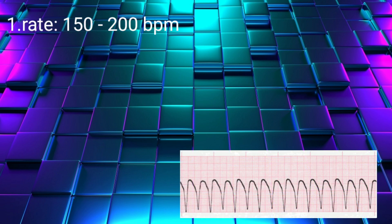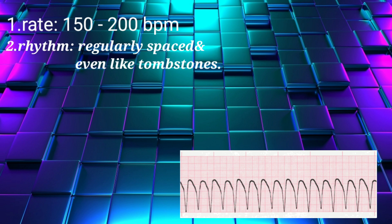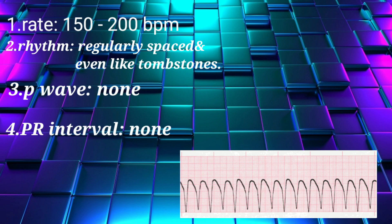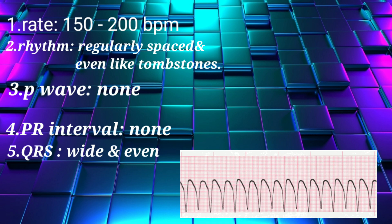There are five simple steps to interpret the ECG of VTAC. First, the rate: 150 to 200 beats per minute. Second, the rhythm: it is regularly spaced and even, like tombstones — look at this, the RR interval is regular. Third, the P wave: none, because there is no atrial contraction. Fourth, the PR interval: none — there is no P wave and therefore no PR interval. Fifth, the QRS complex: it is wide and even — this is the biggest landmark of VTAC.